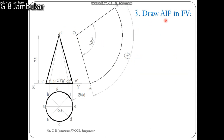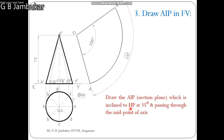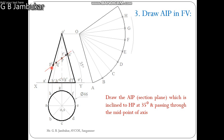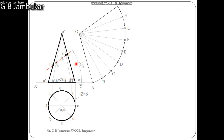Next, draw the AIP in the front view. As per the statement, this section plane is inclined to HP at 35 degrees and passes through the midpoint. First, locate the midpoint of the axis at 37.5 mm, then draw a line through this midpoint inclined to the base at 35 degrees as given. This is the section plane, which intersects the generators at various points. We now make changes in the DLS with the reference points cut by the section plane.